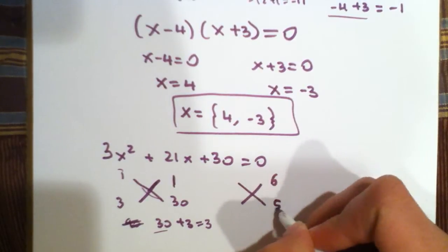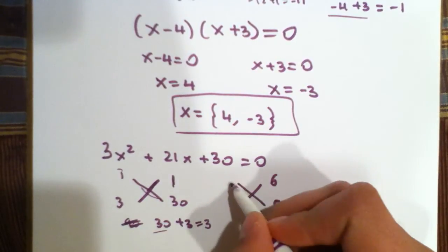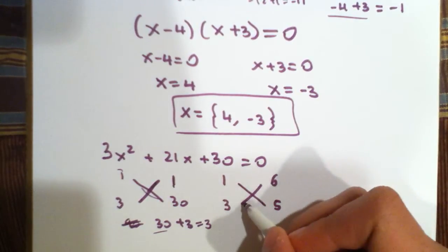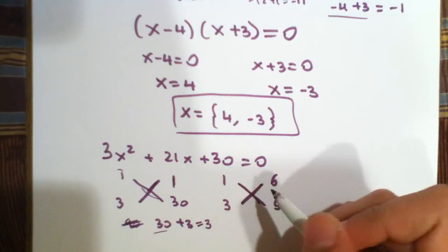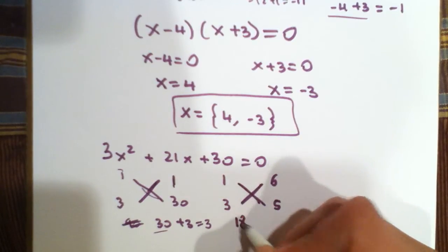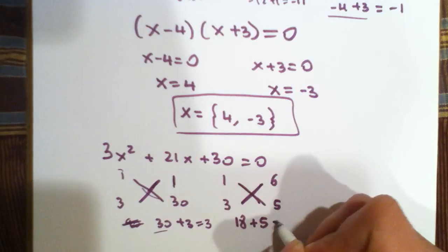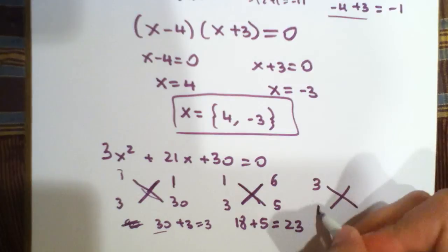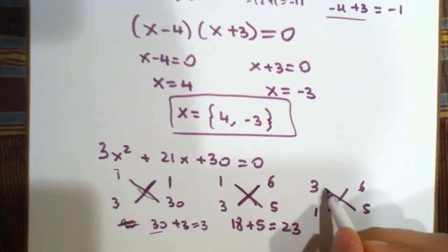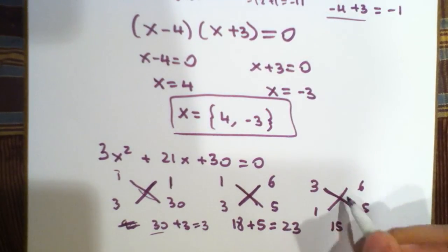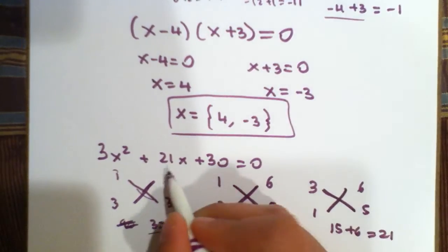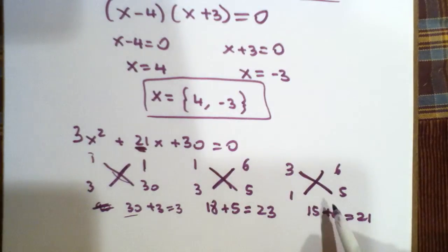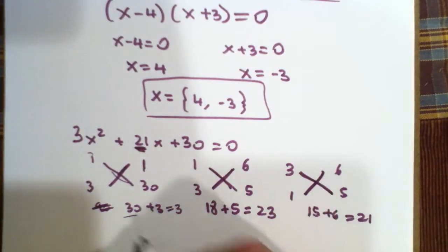How about 6 times 5? And 1 and 3. Well, this is 18 plus 5, which is equal to 23, which is still not 21. But how about if we move the 3 somewhere else, like here? Now, if we multiply here, it'll be 15. We multiply here plus 6. That does equal 21, which is the coefficient in front of this. So now, if we read across again...